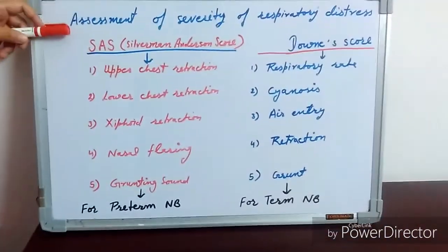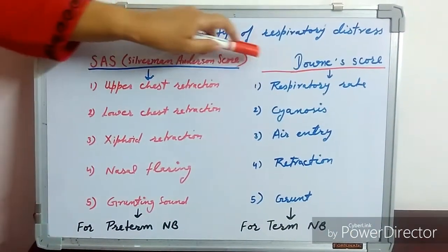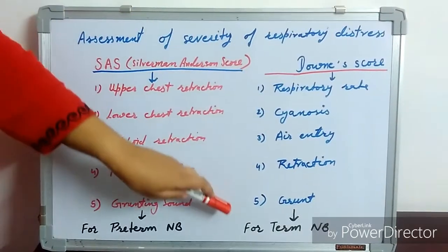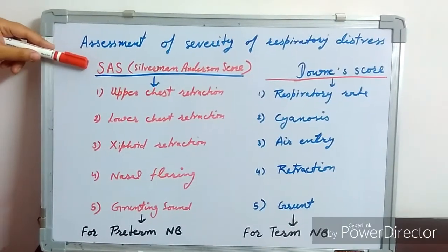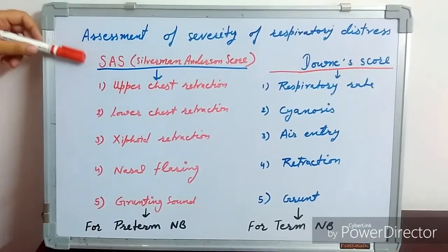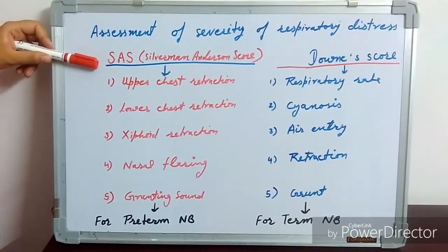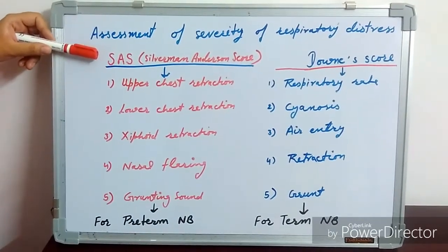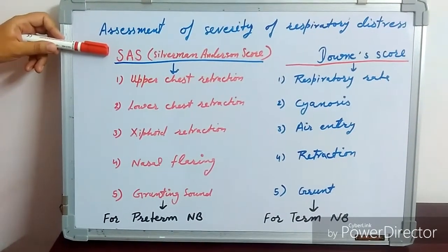So how do we assess the severity of respiratory distress? We have the Silverman-Anderson scoring system for the preterm newborn and Downe's scoring system for the term newborn. We have to look for 5 signs in the Silverman-Anderson scoring system. The minimum score for each sign is 0 and the maximum score is 2, so the total maximum score can be 10 and total minimum score can be 0.